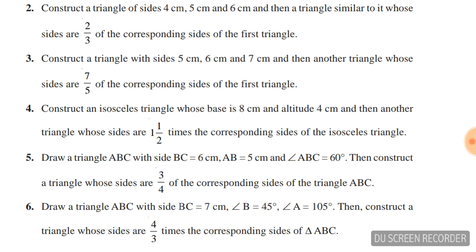Second question: construct a triangle of sides 4 cm, 5 cm, 6 cm, and then a triangle similar to it whose sides are two-thirds of the corresponding sides of the first triangle.